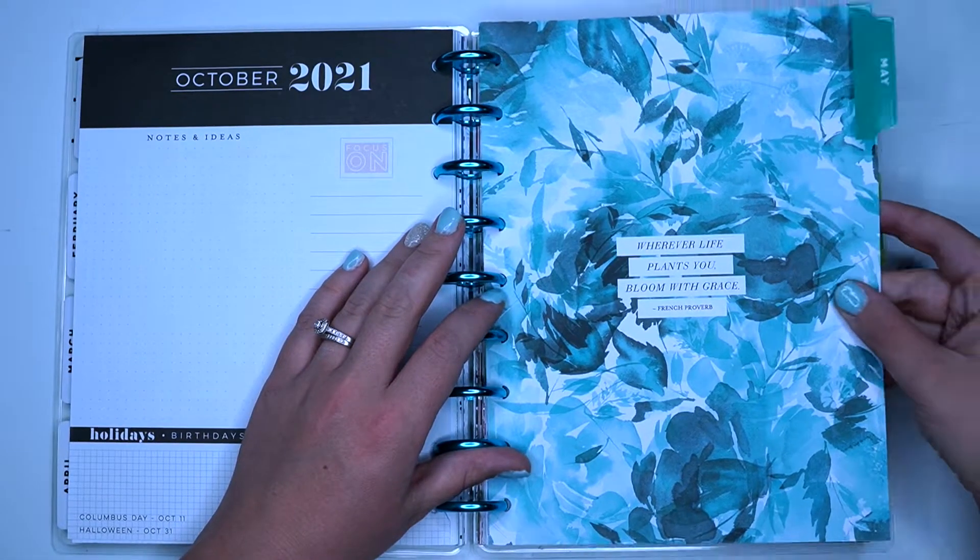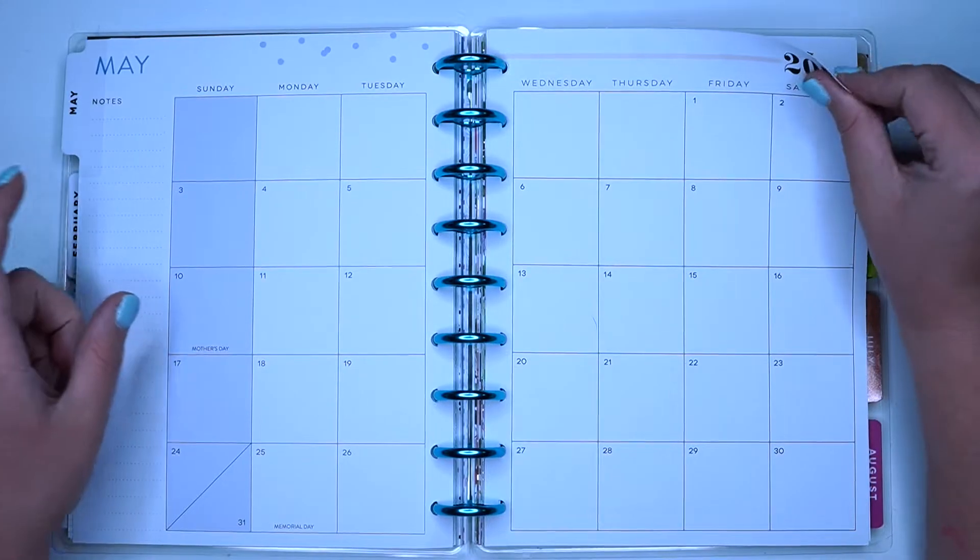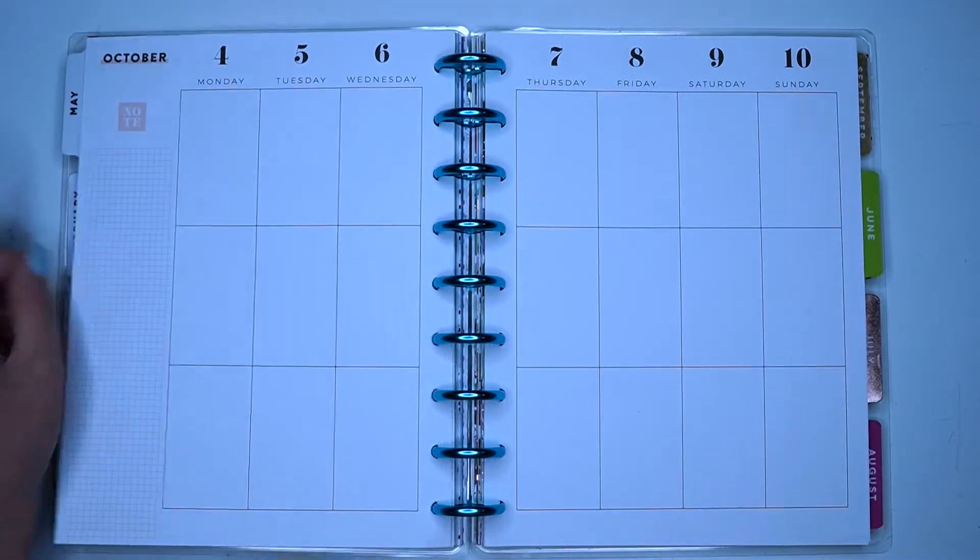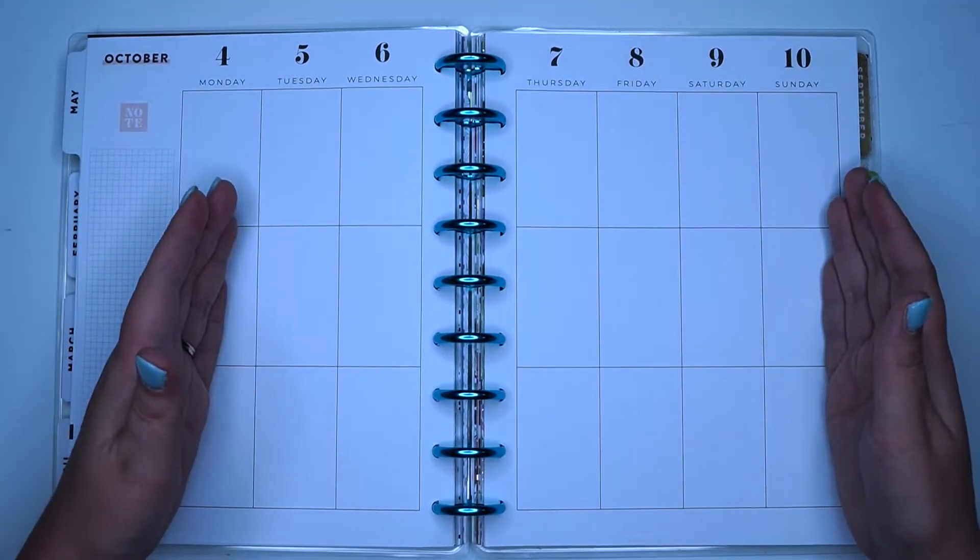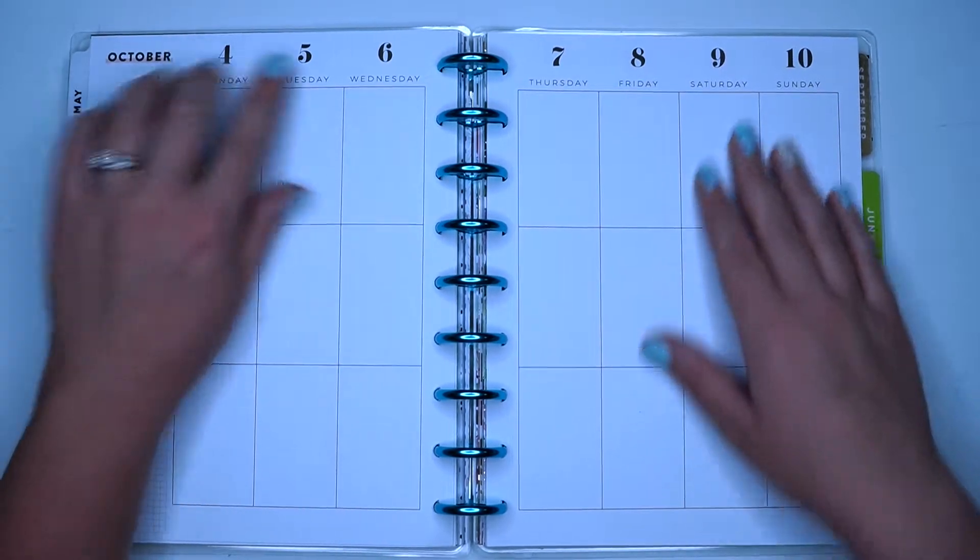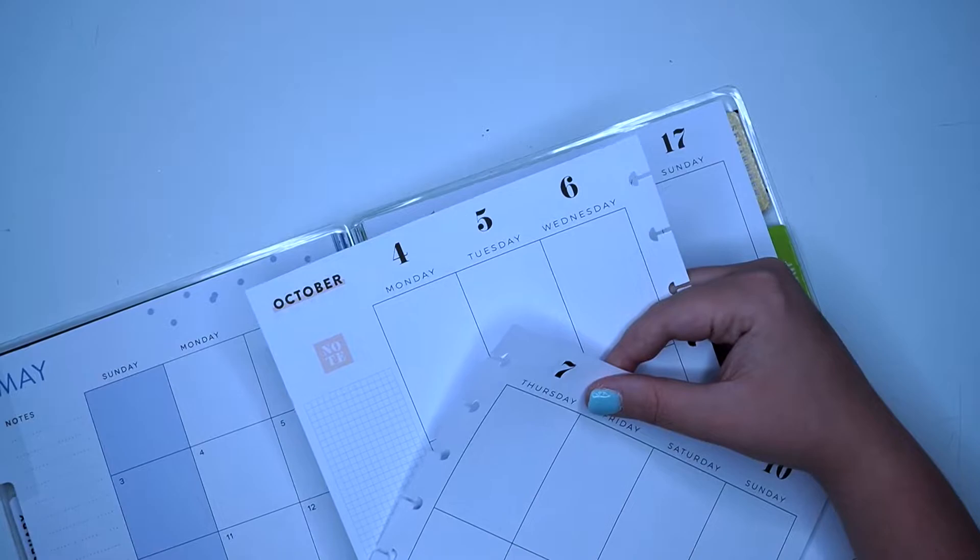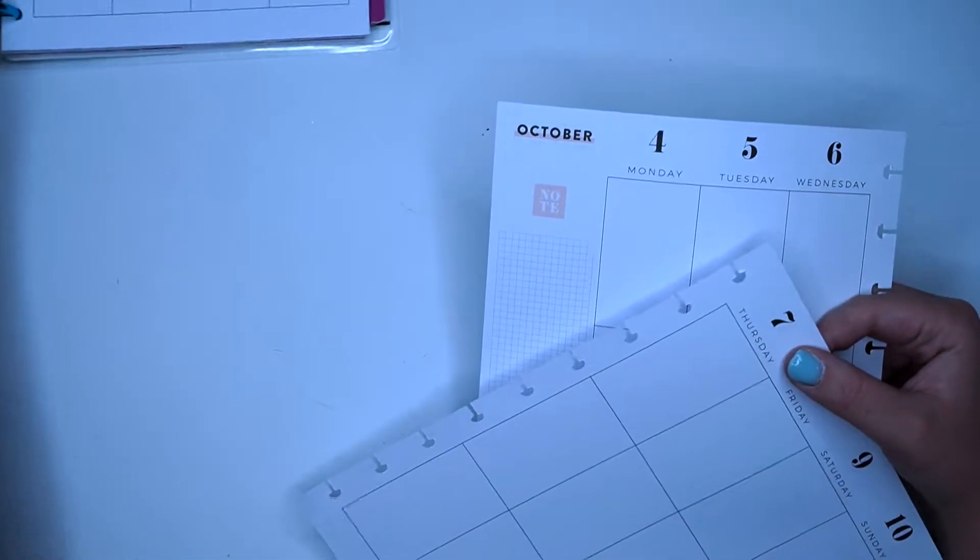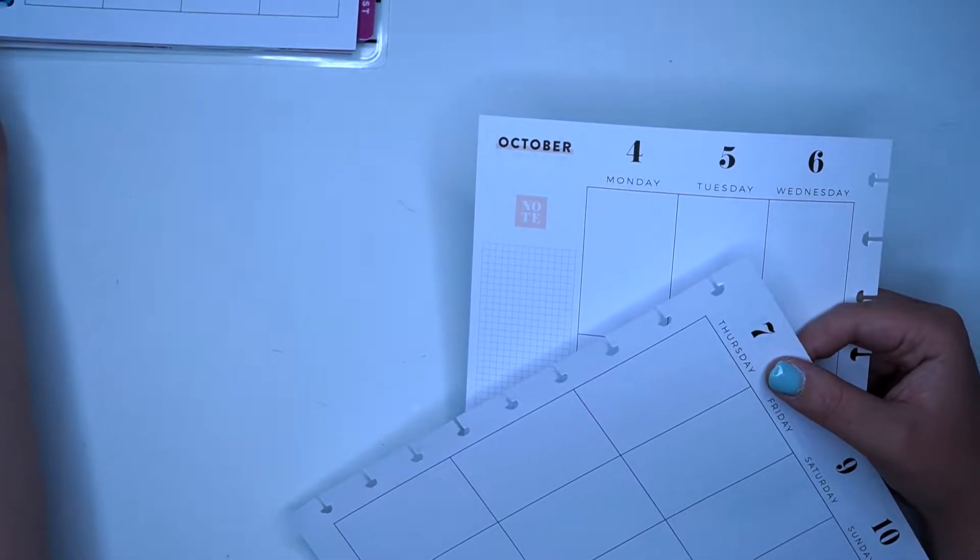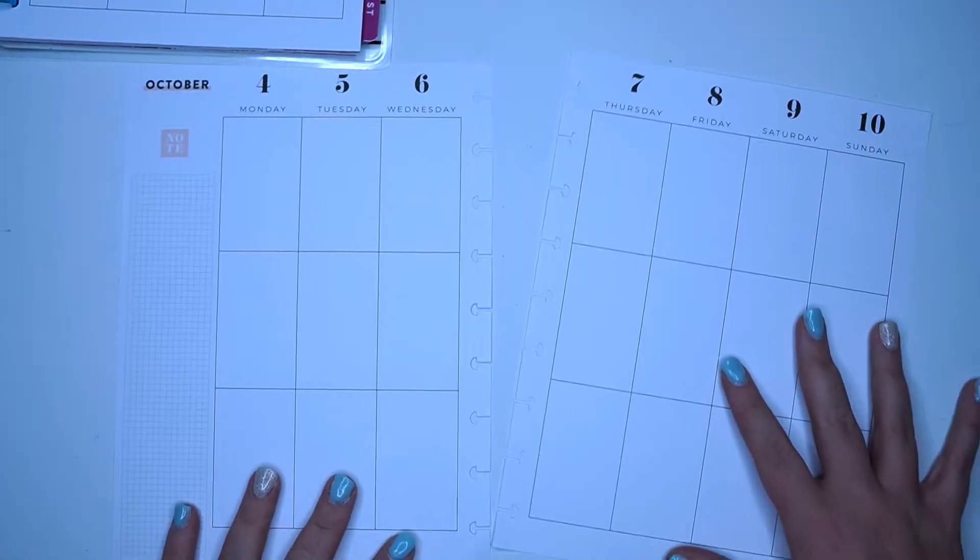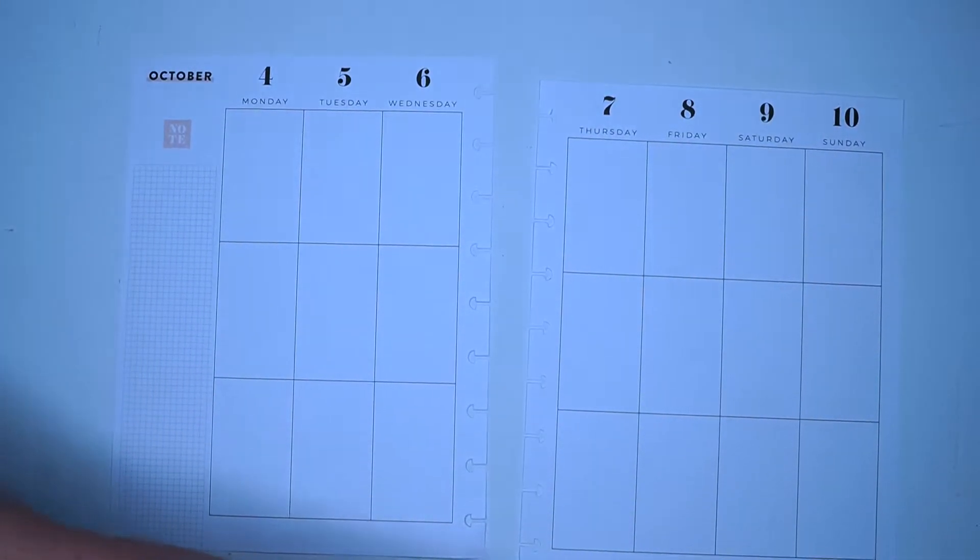We are officially in this beautiful May tab, so pretty. And here we are, May 4th through the 10th. I will cover up that October since I planned the two planners together and it just has the wrong dates. I'm going to have to move this planner out of the way.